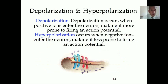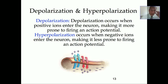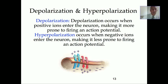Let's look at these terms in more detail. In a resting state, the neuron is polarized — anytime you hear the term polarized, that tells you that the neuron is in a negative electrical state. Depolarization occurs when positive ions move in, making it more prone to firing or having an impulse — though it doesn't necessarily guarantee it fires. Hyperpolarization occurs when negative ions enter the neuron, making it less prone to firing and returning it back to a resting state.